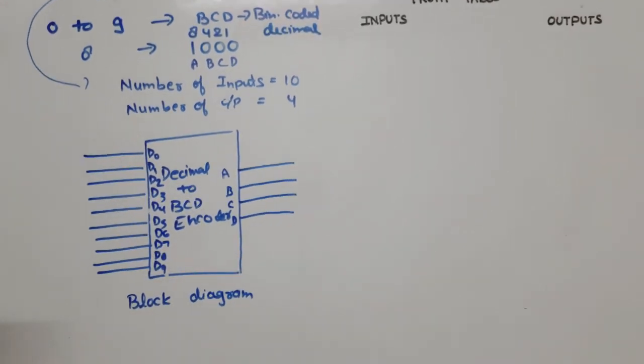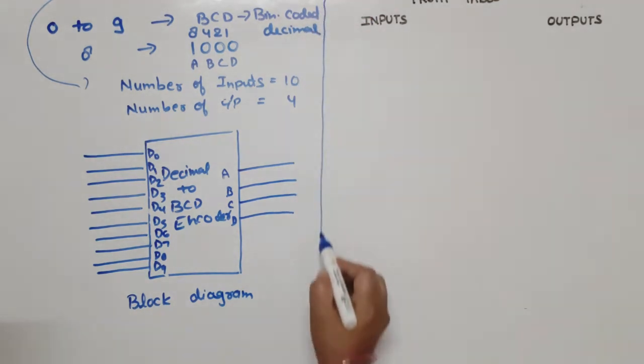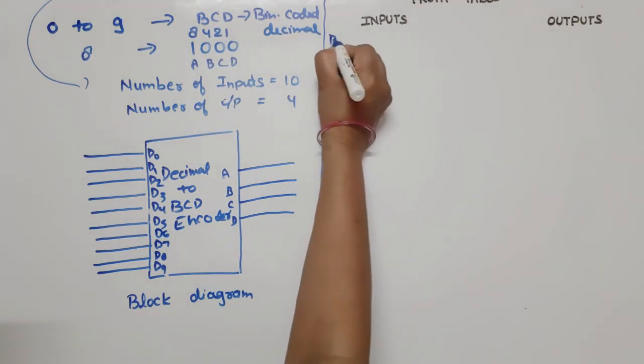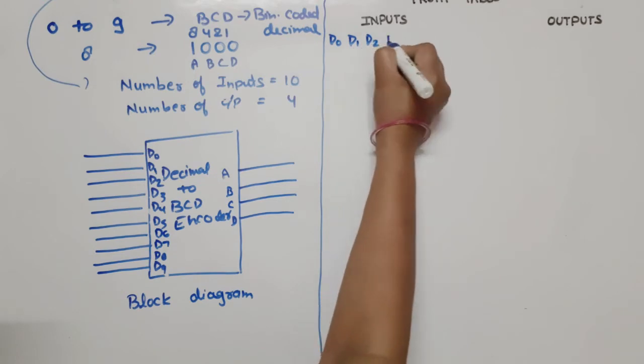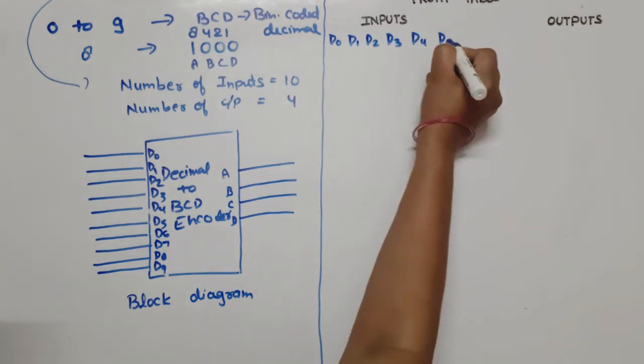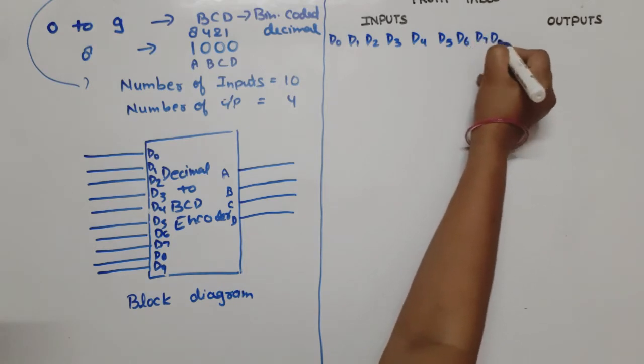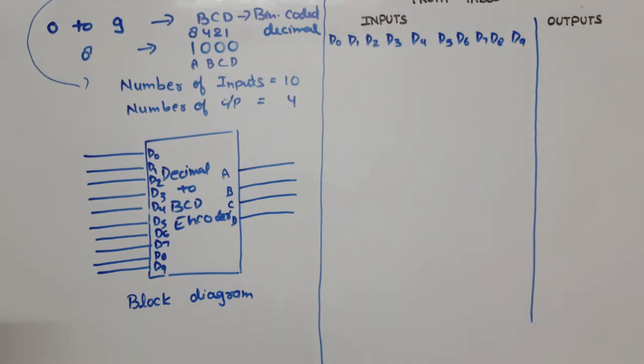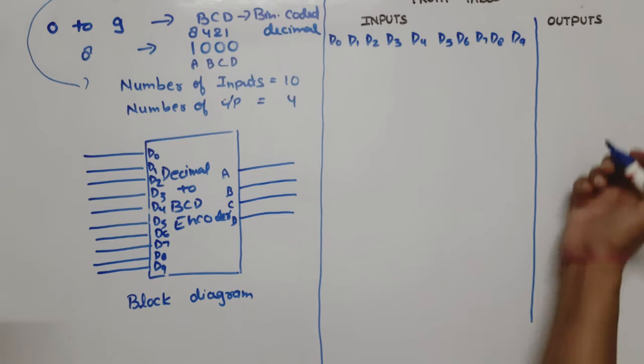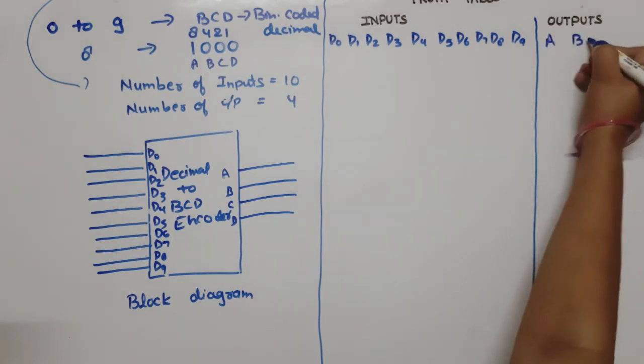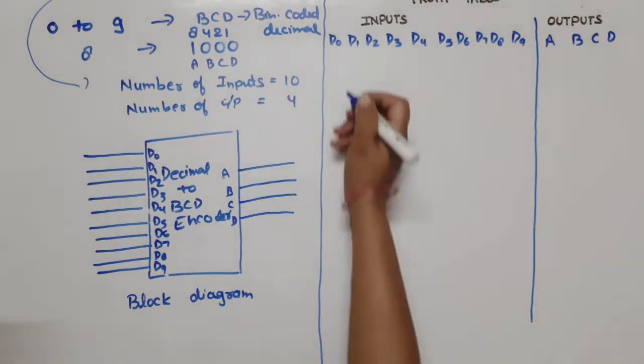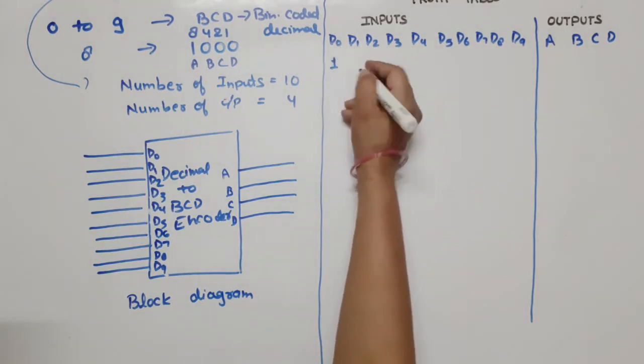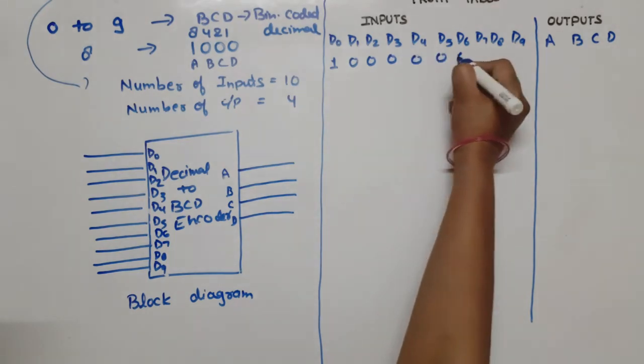Now we draw the truth table according to this diagram. How many inputs are there? Ten inputs. We write inputs first: D0, D1, D2, D3, D4, D5, D6, D7, D8, D9. One more thing - in case of encoder, at a time only one input is high. Outputs are A, B, C, D. At a time one is high. If D0 is one, remaining will be zero.